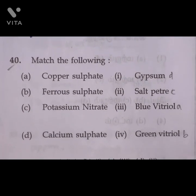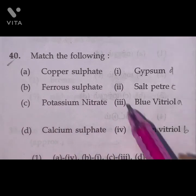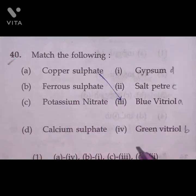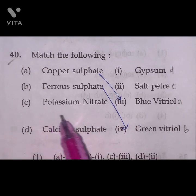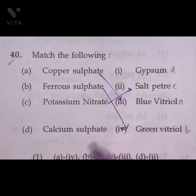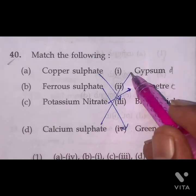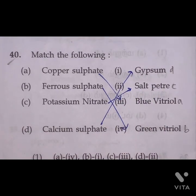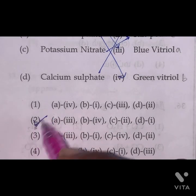Question 40: Match the following — copper sulphate is blue vitriol, ferrous sulphate is green vitriol, potassium nitrate is saltpetre, calcium sulphate is gypsum. According to this, option 2 is the right answer.